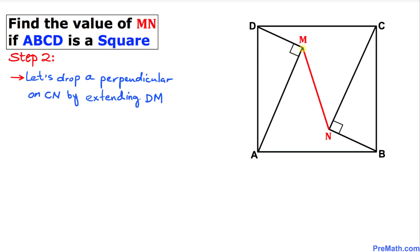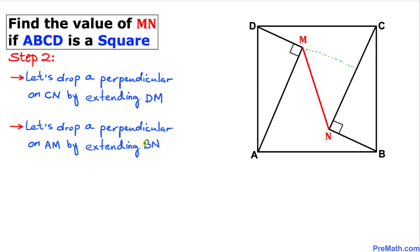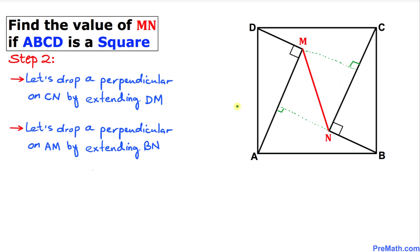Next, let's drop a perpendicular by extending DM onto line CN, and likewise drop a perpendicular on AM by extending BN. So we extend BN to meet AM perpendicularly. Here is our resulting diagram, and these are 90-degree angles.